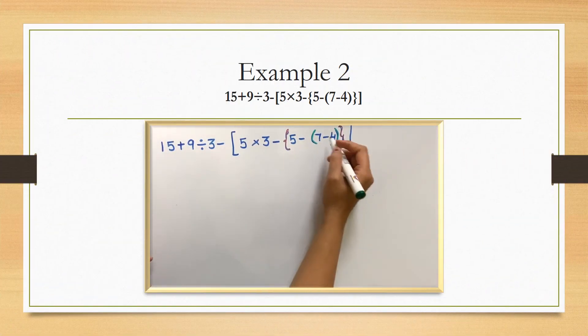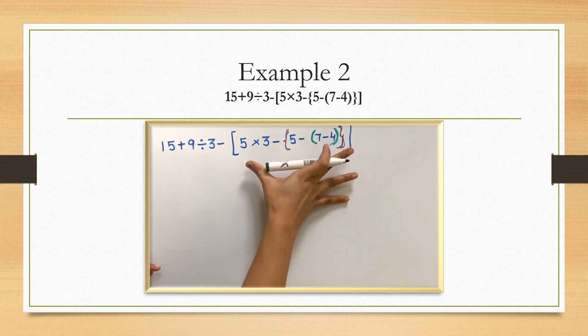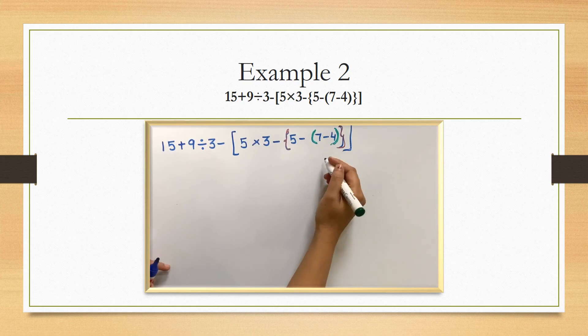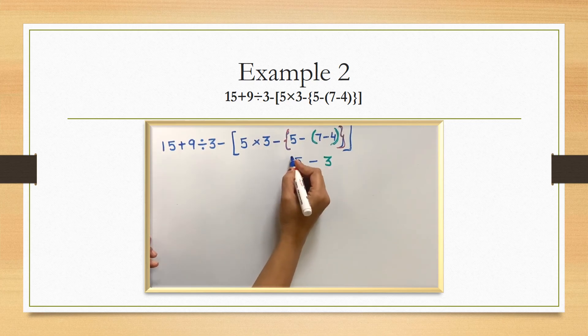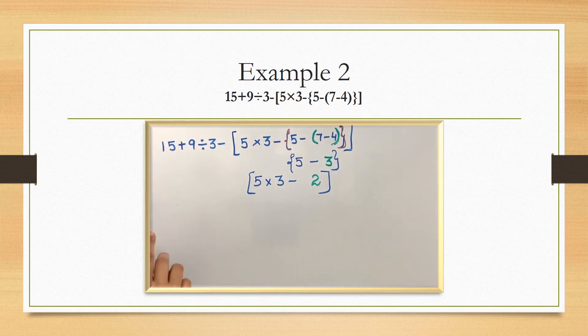You can see there are 3 brackets. The round bracket is the inner bracket, then the curly bracket, then the box bracket. So first we have to do the inner bracket, which is the round one. 7 minus 4, it's 3. Then the curly bracket. 5 minus 3, it's 2. Then the box bracket. In the box bracket, there is multiplication and subtraction. First we have to do the multiplication. 5 into 3, 15.